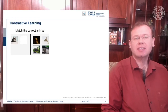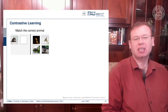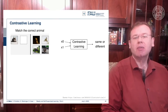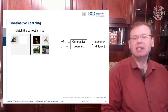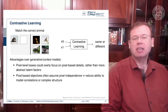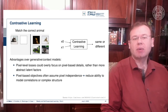In contrastive learning you try to formulate the learning problem as a kind of matching approach. Here we have an example from supervised learning and the idea is to match the correct animal with respect to other animals. The learning task is whether the animal is the same or a different one. This is a very powerful form of training because you can avoid a couple of disadvantages in generative or context models.